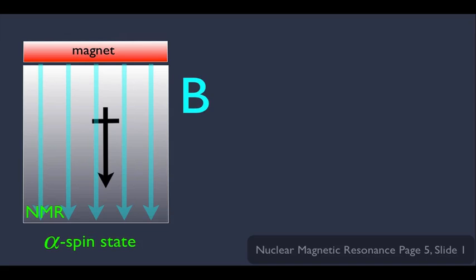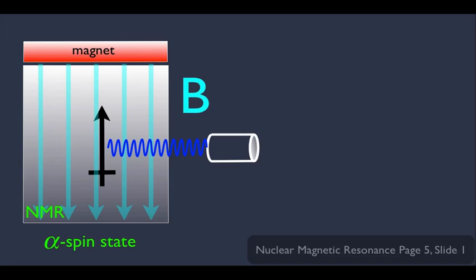We also saw that if we hook up some kind of light fixture here and we shine light which has energy at the nucleus, then the light gives the nucleus energy to go to the higher spin state, which is of course called the beta spin state.